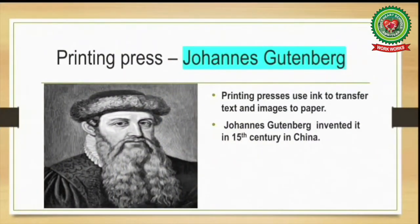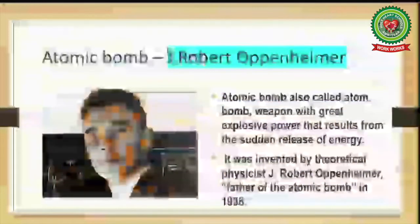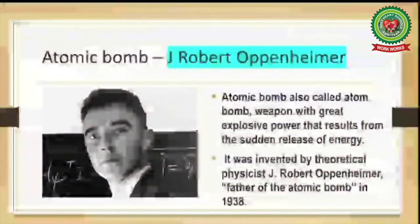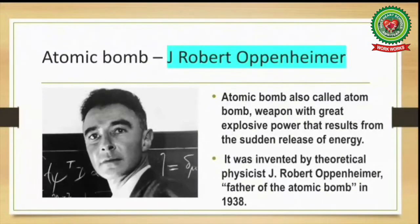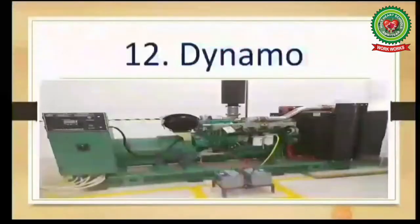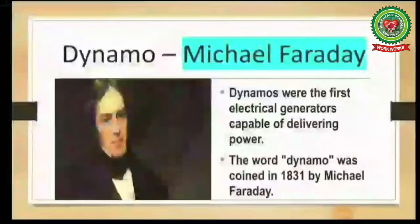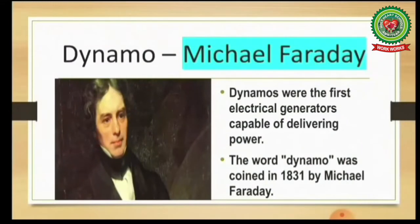The next invention is the atomic bomb. The atomic bomb, also called the atom bomb, is a weapon with great explosive power that results from the sudden release of nuclear energy. It was invented by theoretical physicist J. Robert Oppenheimer in 1938. J. Robert Oppenheimer is also known as the father of the atomic bomb.